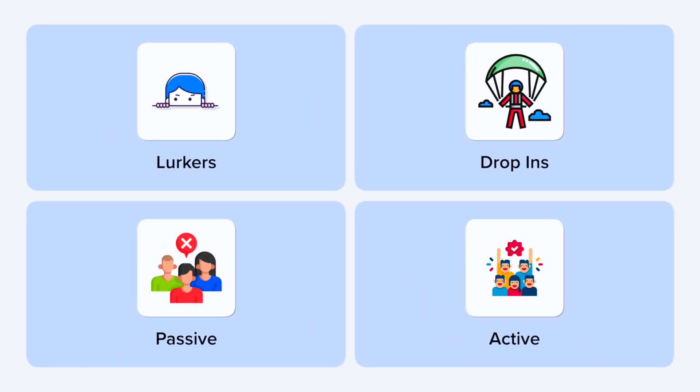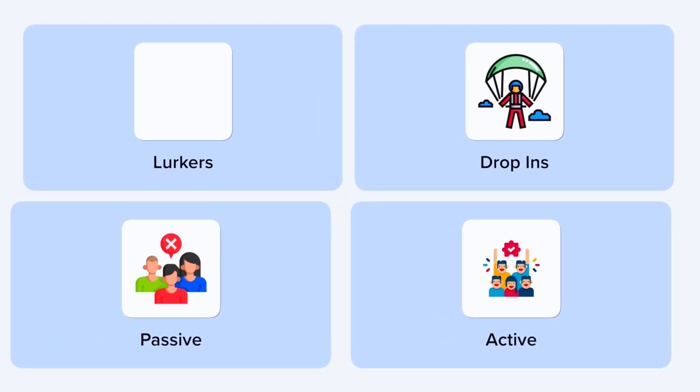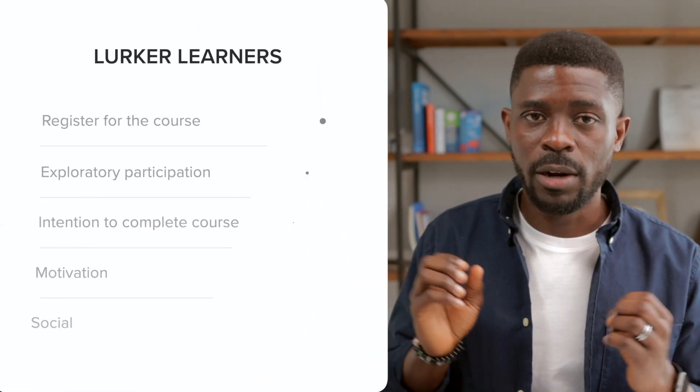Tip number three: get finished. The concept of get finished is to finish whatever you start. As simple as it sounds, it's one of the most mentally challenging things to accomplish when taking online courses. The internet is a major source of distraction, we have families to take care of, and we barely have time to sit in front of a computer. Research shows that over 90% of learners who start online courses do not finish. A study on this identified four types of learners with varying motivations for enrolling.